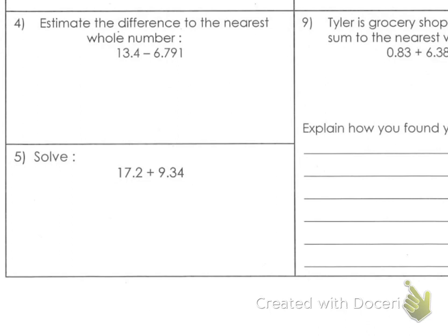In this case, difference subtraction. So the first thing we need to do is round. You round first, and then you add or subtract, or multiply or divide. So we are rounding to the nearest whole number. That means one's place. We shouldn't have any decimals.